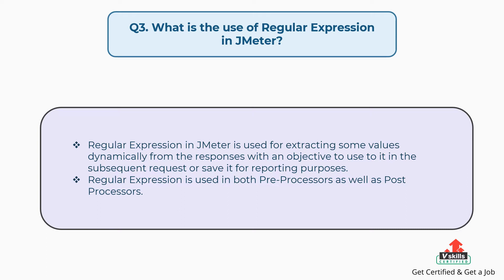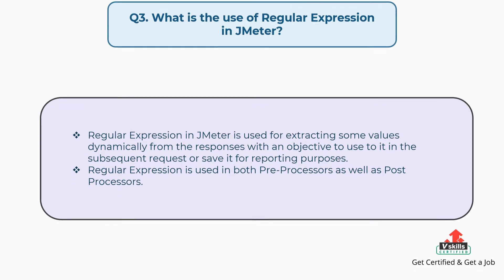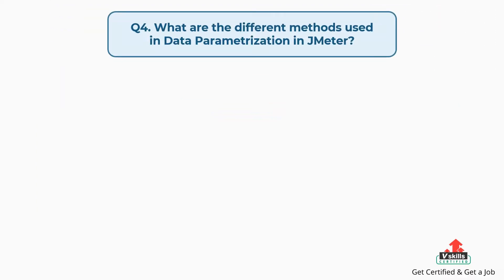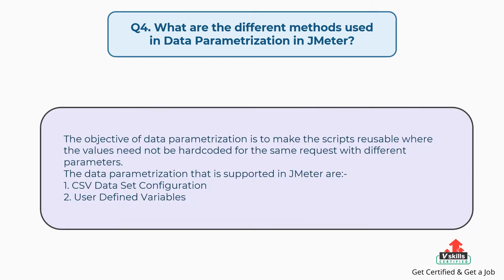Question 3: What is the use of regular expressions in JMeter? Regular expressions in JMeter are used for extracting values dynamically from responses, with the objective of using them in subsequent requests or saving them for reporting purposes. Regular expressions are used in both pre-processors and post-processors.